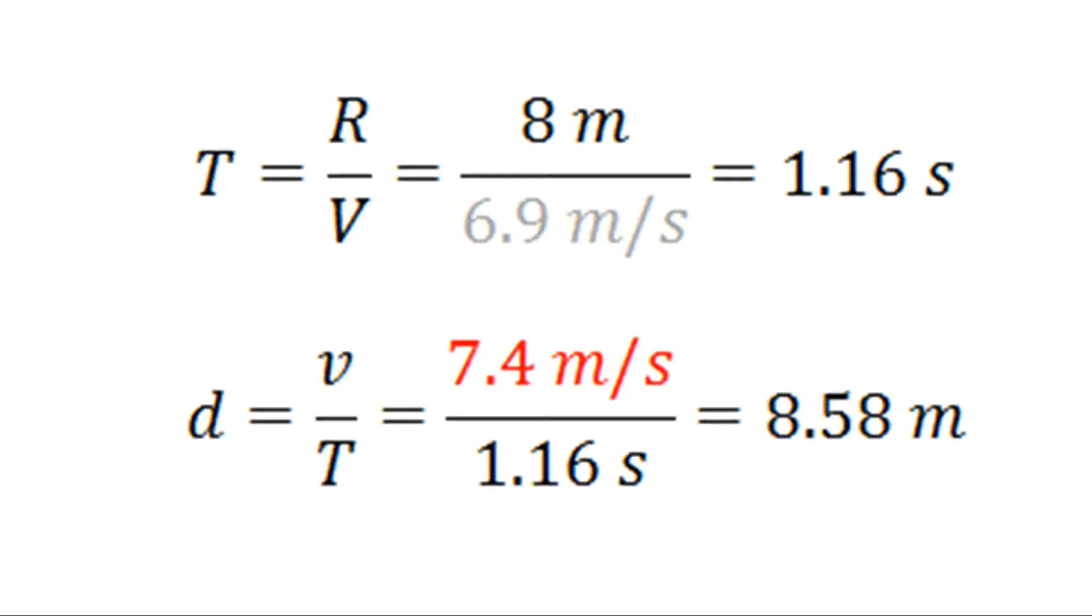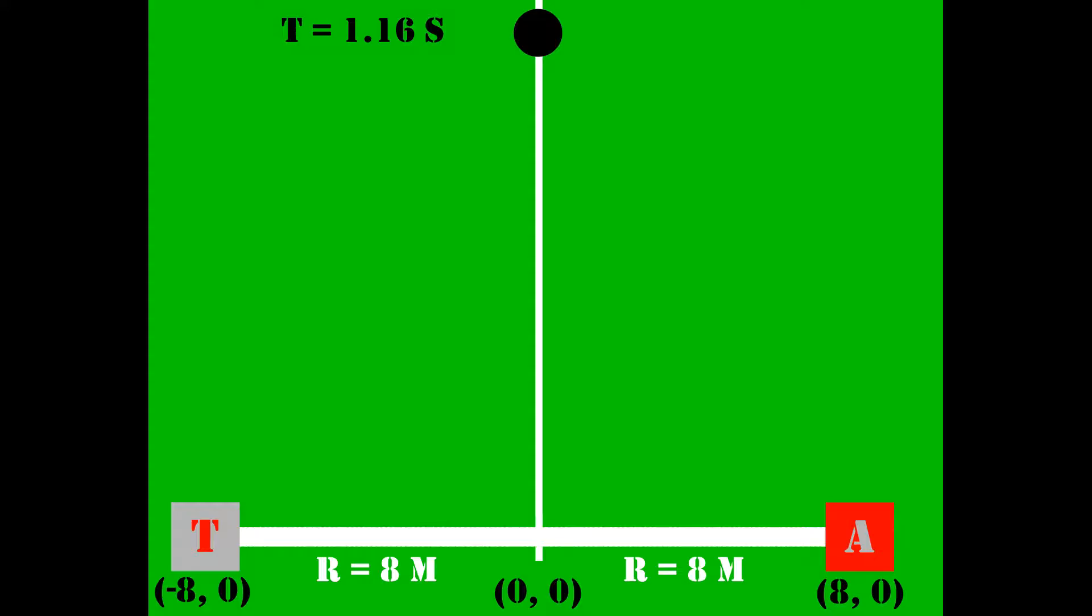T equaling time, R equaling Taylor's position from our perpendicular line, and V equaling Taylor's speed. Plugging in the numbers, we find that the tackle will occur after 1.16 seconds.